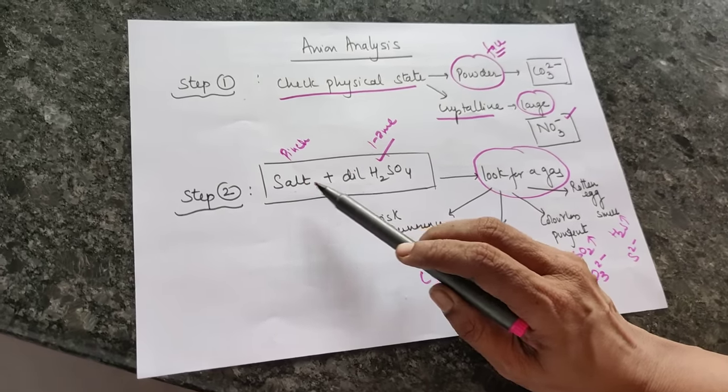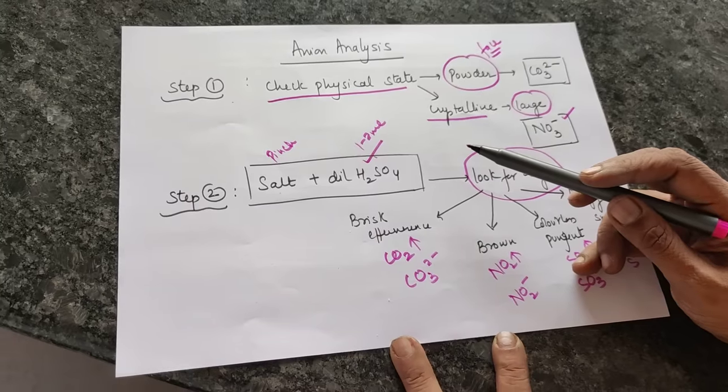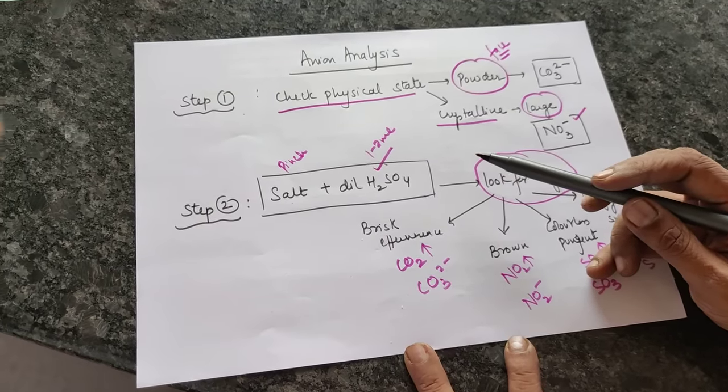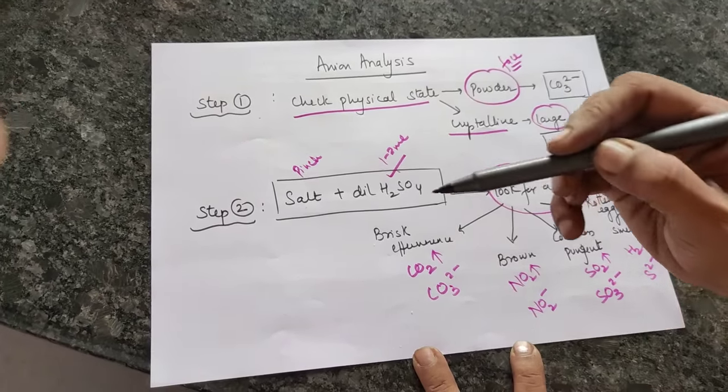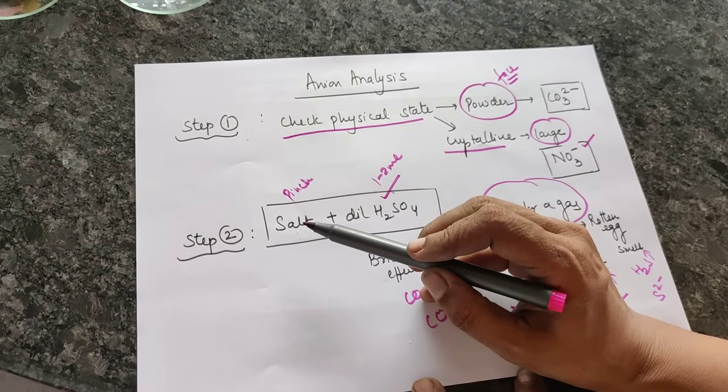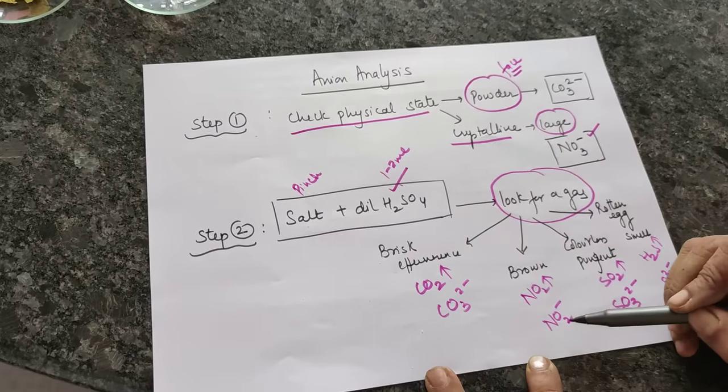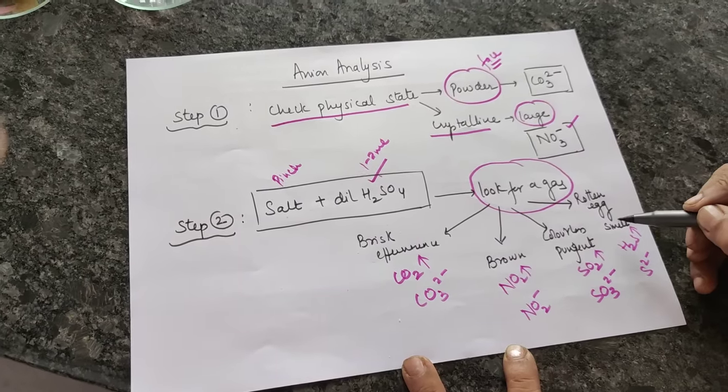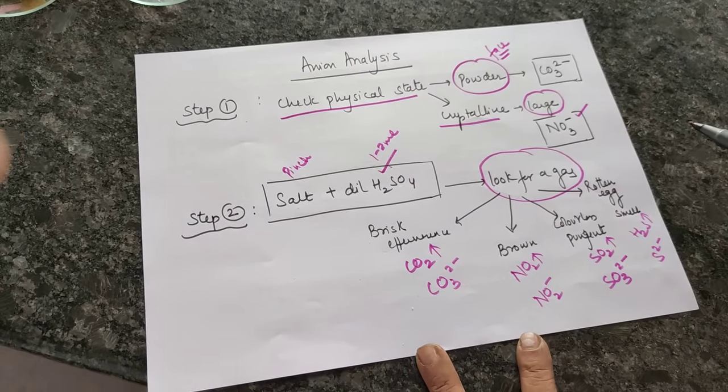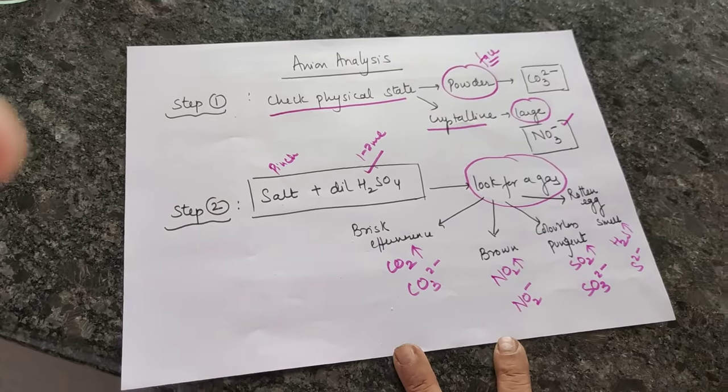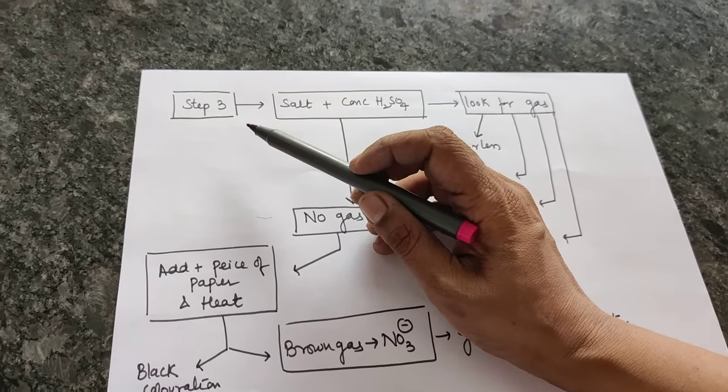So when you have no gas in step one, that also is an advantage. When you add dilute sulfuric acid to your salt and there is brisk effervescence, you would say it is carbonate. Of course, you can do your lime water confirmatory test. But when I add dilute sulfuric acid and there is no gas, that means carbonate, nitrite, sulfite, and sulfide are all absent, and you will now have to go to step number three.